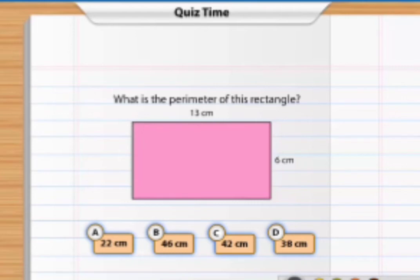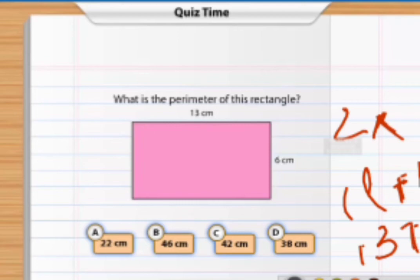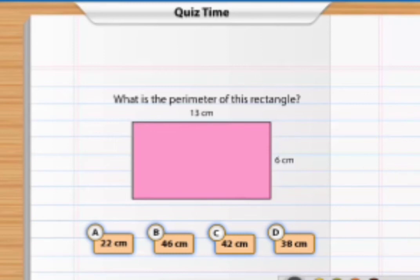So what's the formula for the rectangle, children? The perimeter of the rectangle is 2 multiplied by length plus breadth. So here our length is 13 centimeters. Plus our breadth is 6 centimeters. So 13 plus 6, how much children? 19. So 2 times 19.